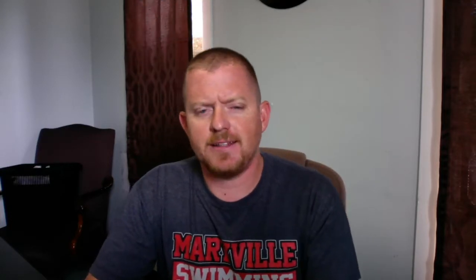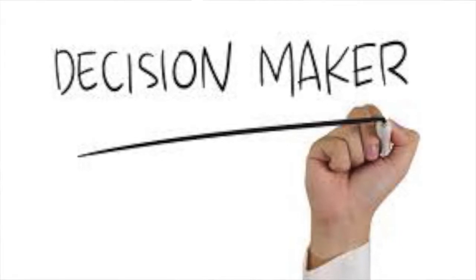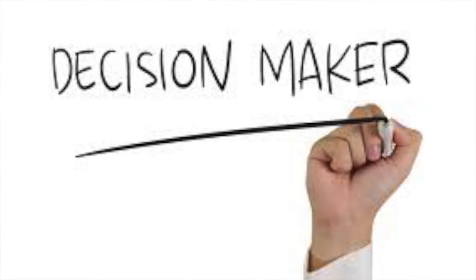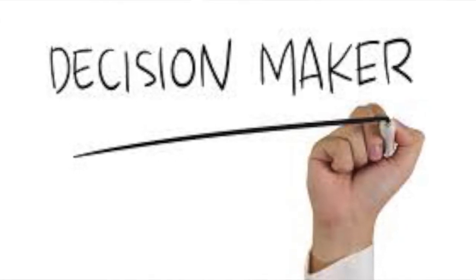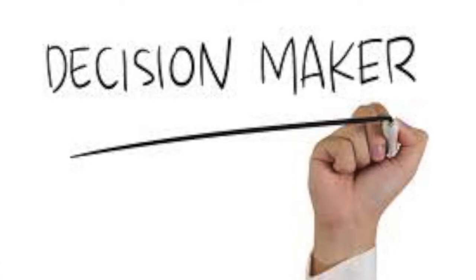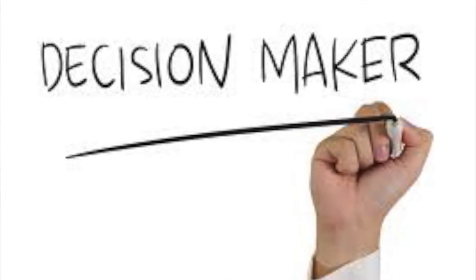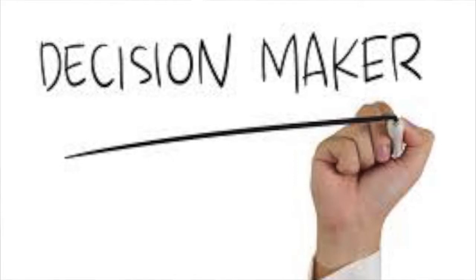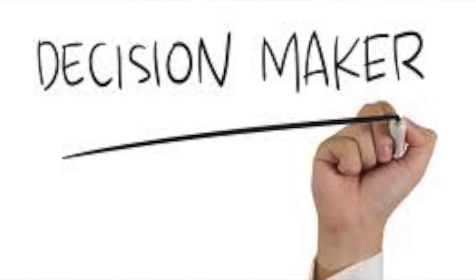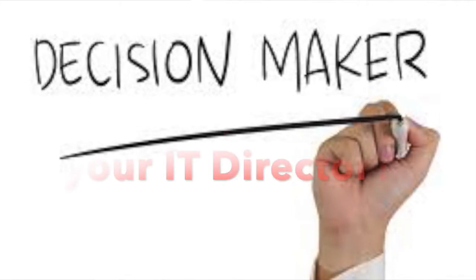We'll start with objective one, and that is to find the decision maker. If this is your first call to a prospective client or you have been unable to make contact with the decision maker, you want to develop a strategy to determine who the decision maker is and how to get in touch with them. This means you should always ask the receptionist or person answering the phone for the name of the individual in the position that you are asking for.